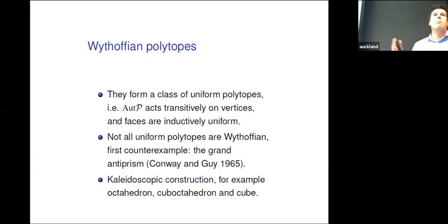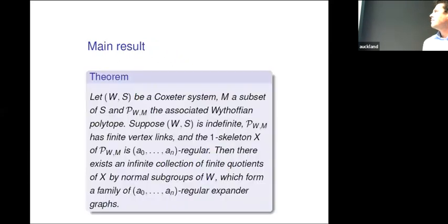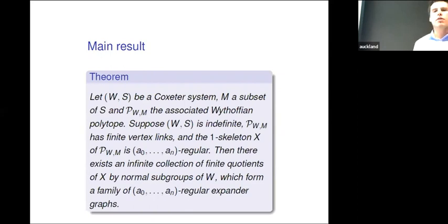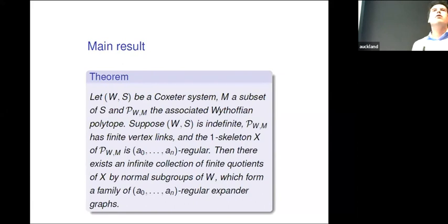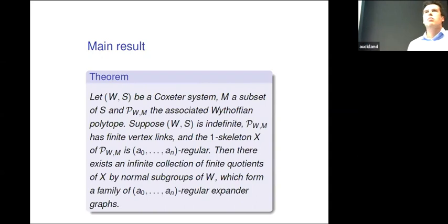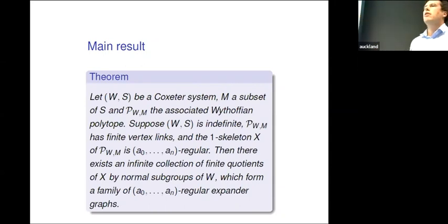Here is the main result. The main result says we can answer the question of Linial and Peled positively. You take a Coxeter system; M is a subset of S corresponding to a choice of vertices — like whether you chose vertices, edges, or faces in the cube example. Just like there was a universal polytope as Tits showed, for this special class of Coxeter diagrams there is also a so-called Wythoffian polytope which you can canonically construct from this Coxeter system. The point is: you start with a group, and you can get a polytope out of it.